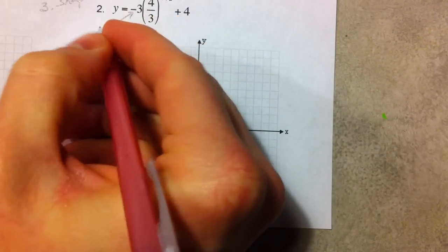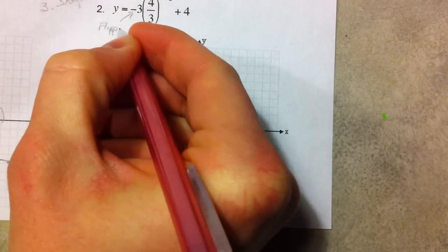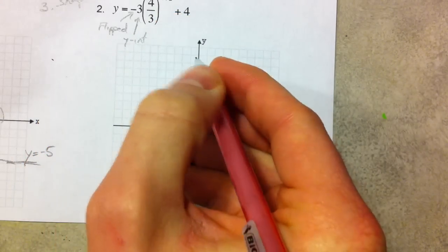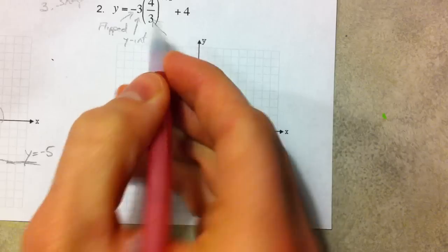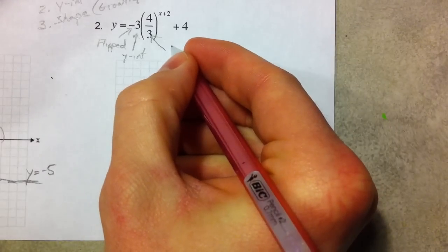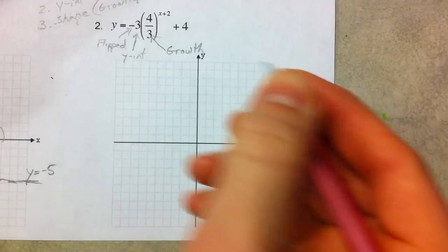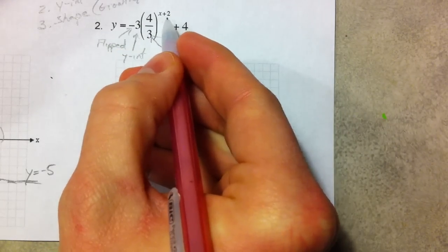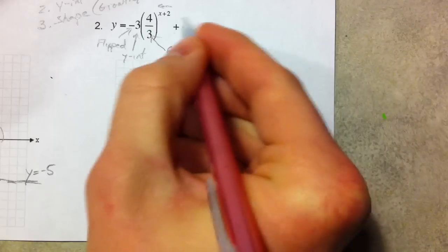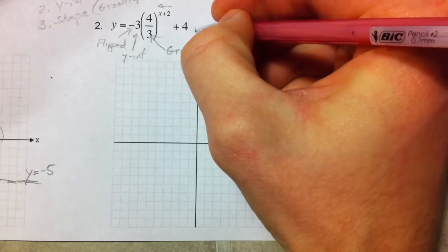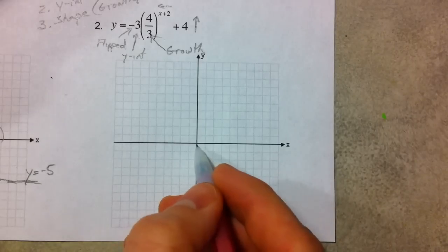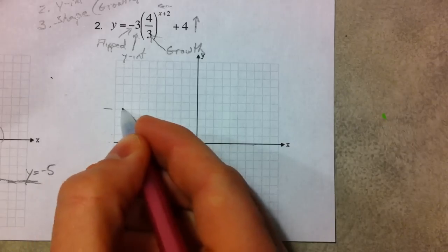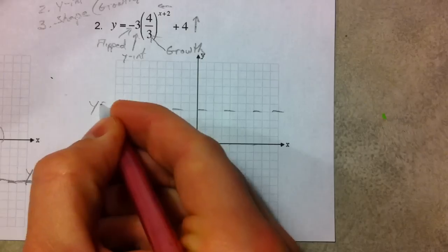On to the next example. The negative tells us the graph is reflected — flipped. Three is the y-intercept. Four-thirds is bigger than one, so it's going to grow. The 'plus two' is with the x, so it shifts left and right, opposite of what we think — it shifts to the left two. The 'plus four' outside shifts it up four, so the horizontal asymptote moves from y equals zero up to y equals four.